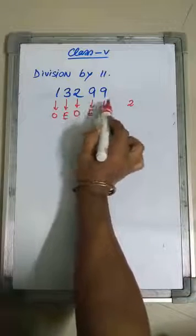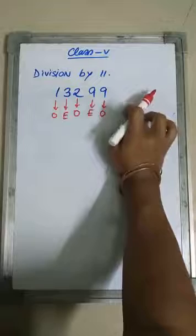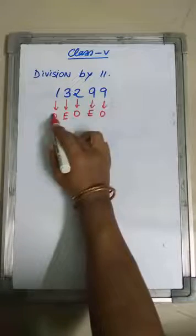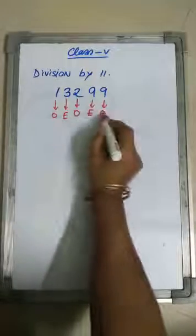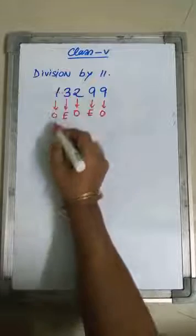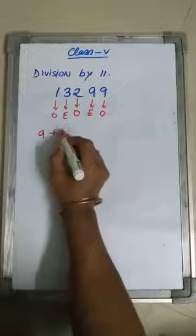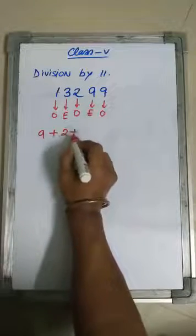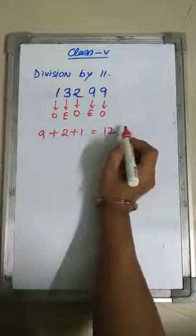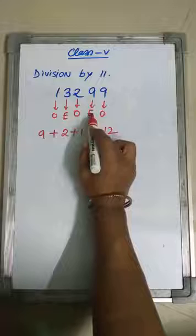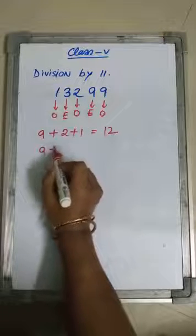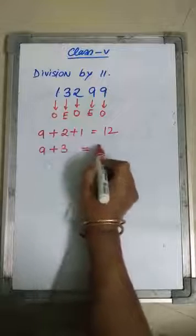So what we have to do? We have to add the odd position digits. At the odd positions, we have 9, 2, and 1. So 9 plus 2 plus 1 is equal to 12. At the even positions, we have 9 and 3. So 9 plus 3 is equal to 12.